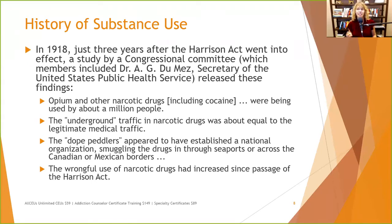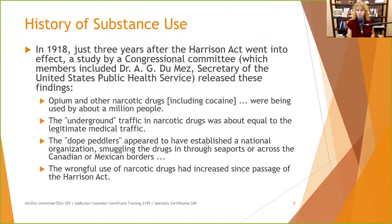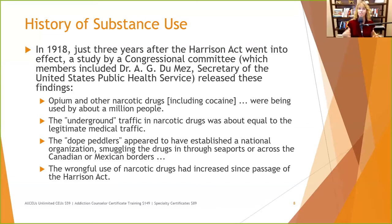In 1918, three years after the Harrison Act went into effect, a congressional committee found that opium and other narcotics including cocaine were still being used by about a million people — where there's a will, there's a way. Underground traffic in narcotic drugs was roughly equal to legitimate medical traffic. Dope peddlers had established a national organization smuggling drugs through seaports or across the Canadian or Mexican borders. The wrongful use of narcotic drugs had actually increased since the passage of the Harrison Act — they passed it for taxation, and people just went underground.